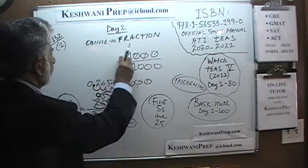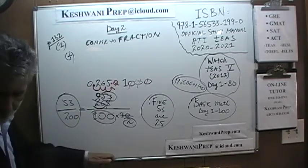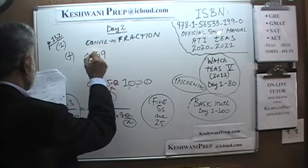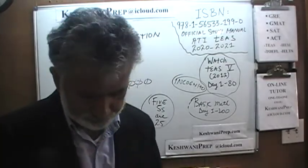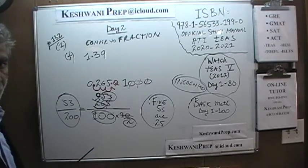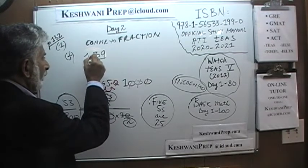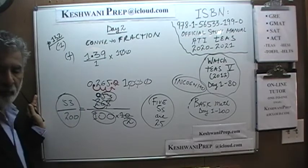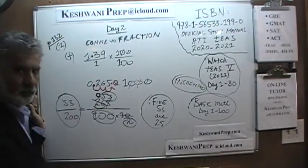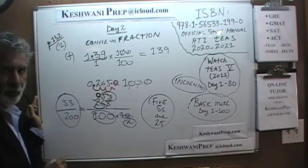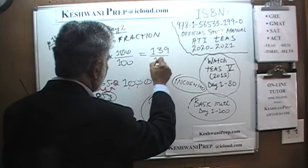Let's look at F. We have to convert 1.39 into a fraction. How do we convert it into a fraction? By making it a whole number. So it is 1.39 over 1. There are two decimal places, so we multiply the top by 100. We must do the same to the bottom. 1.39 times 100 becomes 139, because we pick up the decimal and move it two spots to the right. The bottom becomes 100 times 1, which is 100. So the answer is 139 over 100.